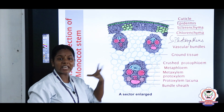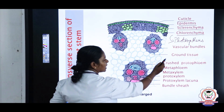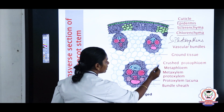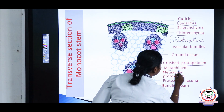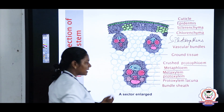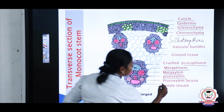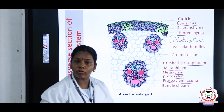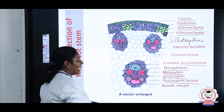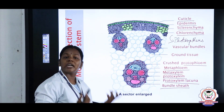The vascular bundles are scattered throughout the ground tissue. The vascular bundle looks like a skull shape. The phloem, shown in blue, functions in transport of food. The phloem is divisible into protophloem and metaphloem. Similarly, xylem has protoxylem and metaxylem. The protoxylem disintegrates to form an empty cavity called the protoxylem lacuna — an important question: the protoxylem descends downward to form an empty cavity called protoxylem lacuna. The layer surrounding the vascular bundle is called the bundle sheath.